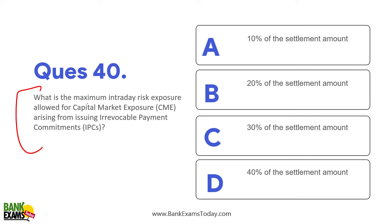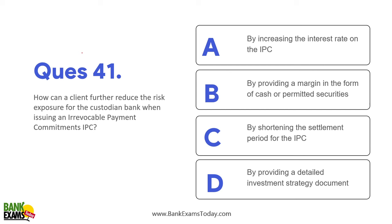What is the maximum intraday risk exposure allowed for capital market exposure arising from issuing IPCs? 30% of the settlement amount. This risk is considered as capital market exposure and 30% of the settlement amount is allowed. How can a client further reduce the risk exposure for a custodian bank when issuing an IPC? By providing margin payments in the form of cash — then there is no risk. You have to keep capital according to Basel norms.